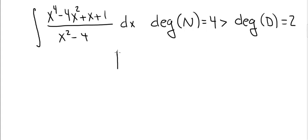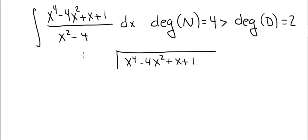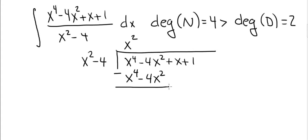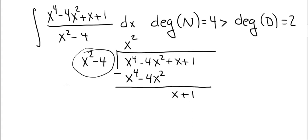So first we have to perform long division. We have x to the fourth minus 4x squared plus x plus 1, divided by x squared minus 4. This gives x squared, since x squared times x squared is x to the fourth minus 4x squared. Subtracting, the x to the fourth and the minus 4x squared terms cancel, and we end up with x plus 1 as the remainder. Since the degree of x plus 1 is 1 and the degree of x squared minus 4 is 2, we stop — x plus 1 is the remainder.